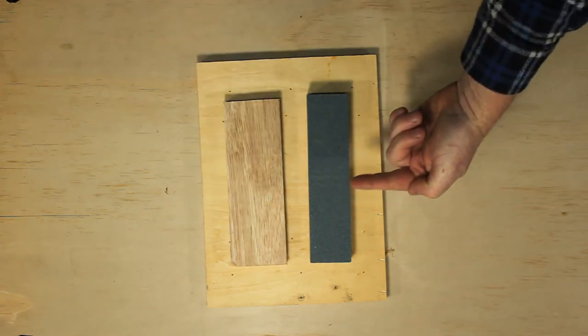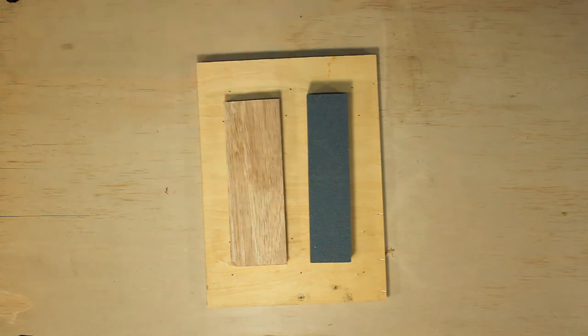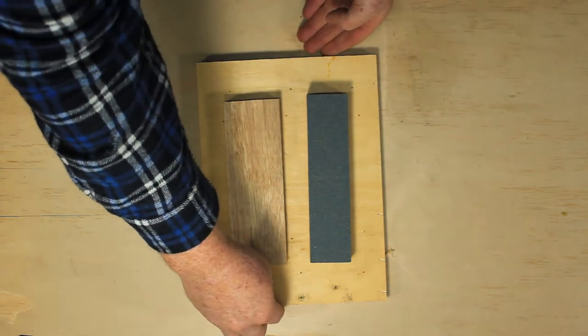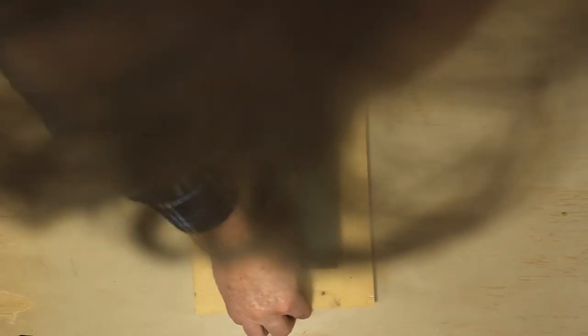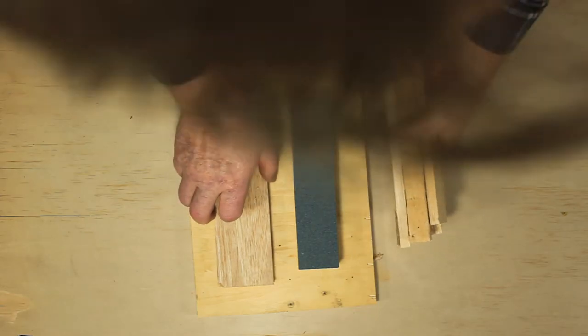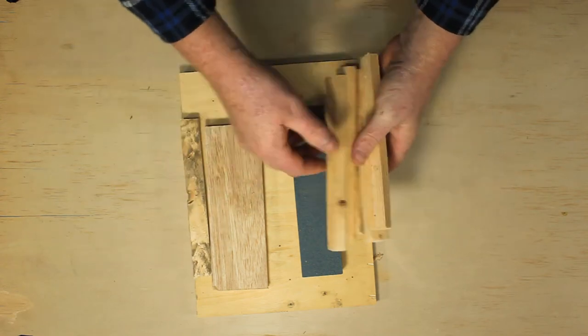I like to work from left to right, so I'm going to put the stone here on my left and the strop on my right. To prevent the stone and strop from moving around on our board, we're just going to make a perimeter of some little strips of wood.